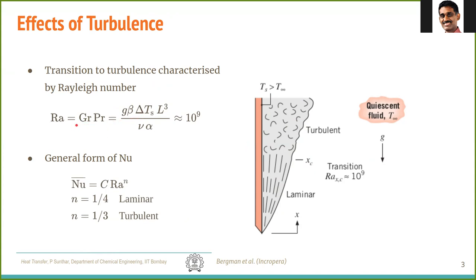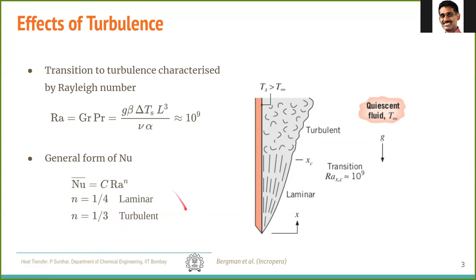The transition from laminar to turbulent regime is governed by the Rayleigh number, which is the Grashof number times the Prandtl number: Ra = (g·β·ΔT·L³)/(ν·α). The critical Rayleigh number for transition from laminar to turbulent in natural convection is 10^9. In general, the Nusselt number correlation takes the form C·Ra^n, where n = 1/4 for laminar and n = 1/3 for turbulent flows.